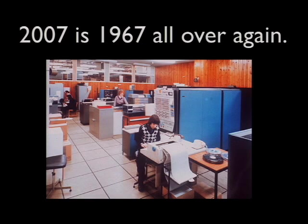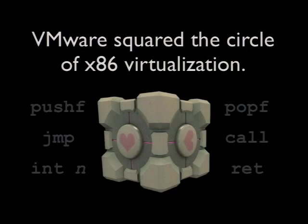What VMware specifically brings is x86 virtualization, and this was something many said couldn't be done. There's a seminal paper by Popek and Goldberg that people latched onto, saying you can't actually virtualize the Intel ISA — it's not possible. There are all sorts of instructions that mess with the internals of the processor that you can't trap, like call and return, PUSHF and POPF.